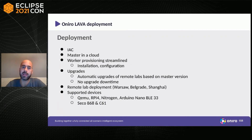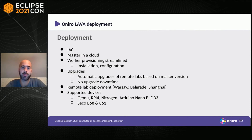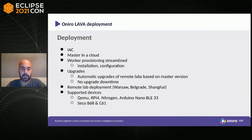When the master server is upgraded, all workers are upgraded automatically wherever they are — at a vendor site or local site — with no downtime. We currently have three remote labs: one in Warsaw, one in Belgrade, and one in Shanghai. Supported devices currently tested in Oniro are QEMU, Raspberry Pi 4, Nitrogen, and Arduino Nano BLE 33. Two more devices — the Seco B68 and C61 — are ready to be set up.